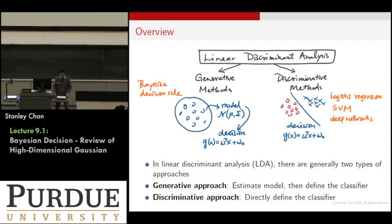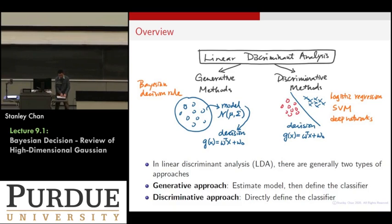We want to understand the principles, draw a lot of pictures, understand the geometry, and then try to understand the connectivity between different methods. Under this big umbrella called linear discriminant analysis, I am going to separate them into two different classes of methods. One branch is called the generative method and the other one is called the discriminative method.